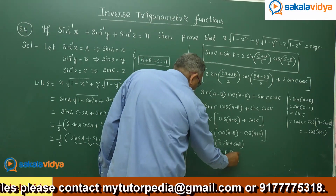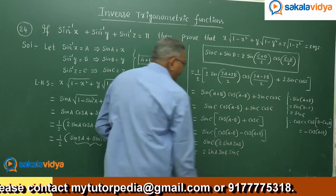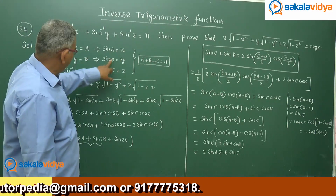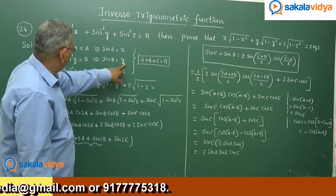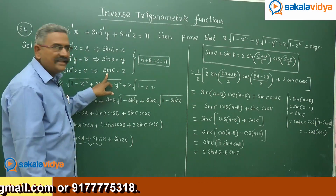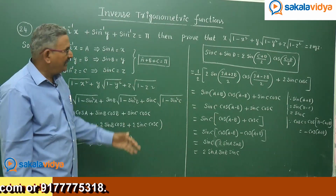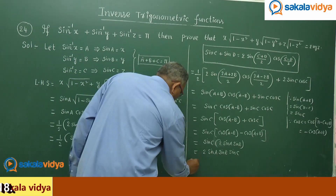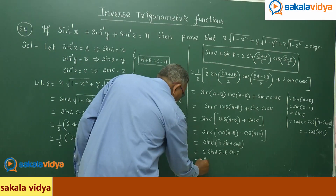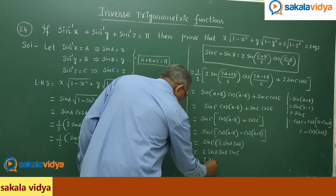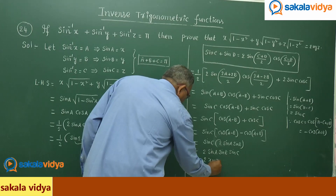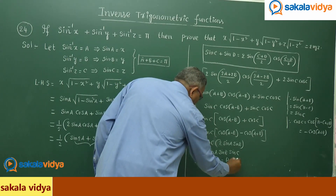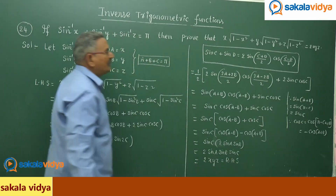Now, sin A = x, sin B = y, sin C = z. Replacing these values, this equals 2xyz, which is the right-hand side. Hence, it is proved.